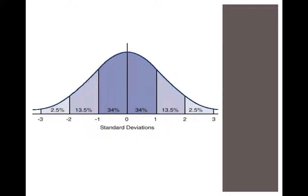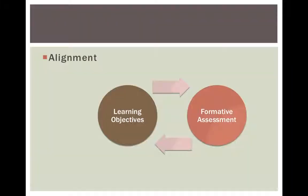We don't want to be normative assessment makers — that's not our job to look for variance among students. We actually want to be performance assessment makers, where we create an assessment with the expectation that if we as teachers have done our jobs well, then most if not all of our students have done well. We don't want to see variance; we want to see uniformity so that all of our students have had the opportunity to be successful. Your assessment is as important as your instruction — those two should work together, and you want to see students do well at the end.